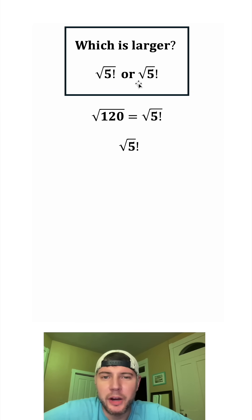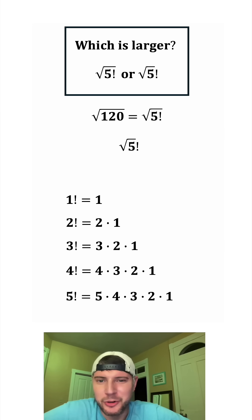Next, let's look at the quantity square root of 5 factorial. Once again, here's all the different factorials: 1 factorial is equal to 1, 2 factorial is equal to 2, 3 factorial is equal to 6, 4 factorial is equal to 24, and 5 factorial is equal to 120.